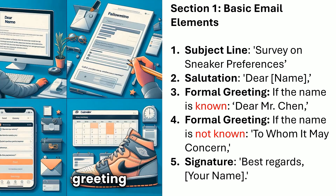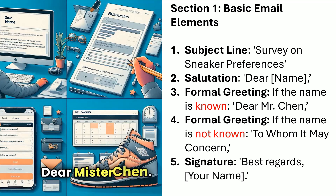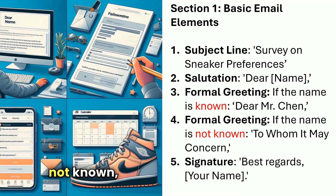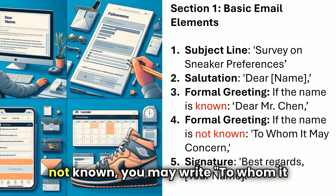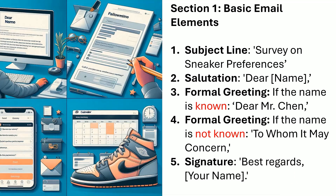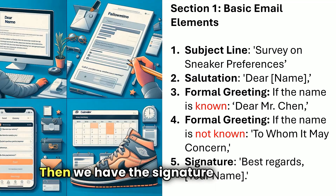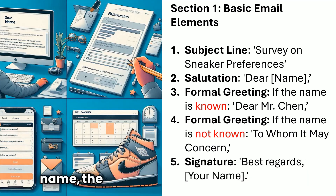In a formal greeting, if the name is known, write 'Dear Mr. Chen.' If the name is not known, you may write 'To Whom It May Concern.' It is best, however, to write the name of an individual. Then we have the signature: 'Best regards,' followed by your name — the name of the email sender.